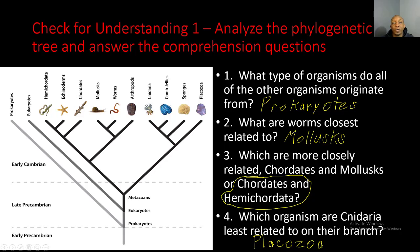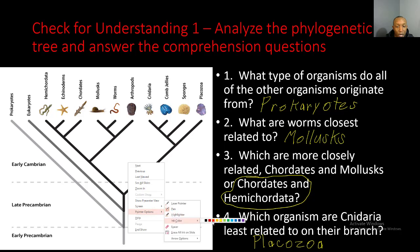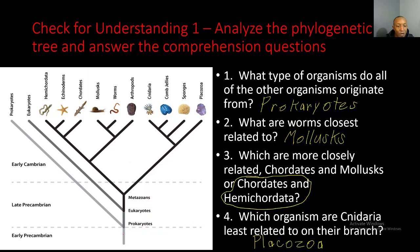Let's see how you did on your first check for understanding. Number one: what type of organisms do all the other organisms originate from? If you look at the very bottom of this phylogenetic tree, the first organism they all originate from are prokaryotes.